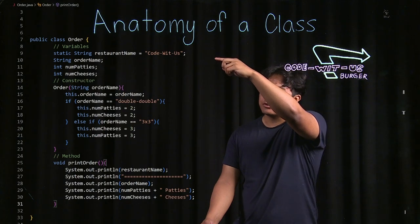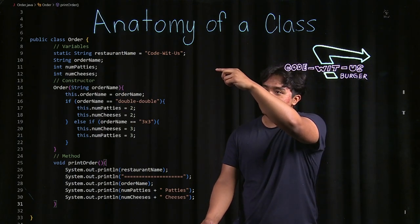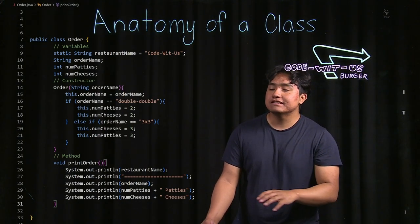Then these three variables here—order name, numpatties, and numcheese—those are instance variables, so those will change with every instance.